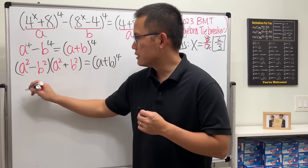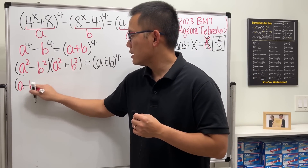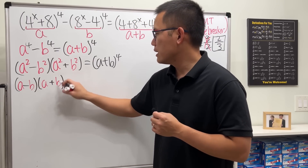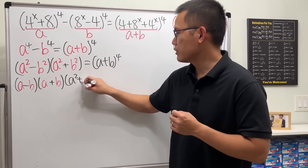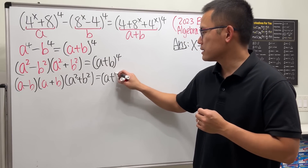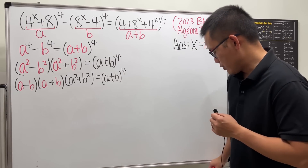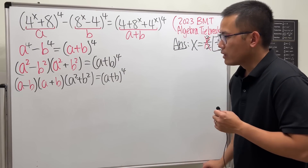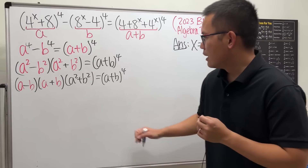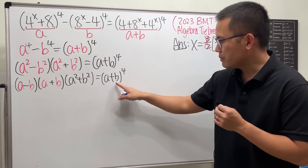We can continue factoring: a squared minus b squared is just a minus b times a plus b. So the left side becomes (a minus b)(a plus b)(a squared plus b squared), and the right-hand side is still a plus b to the fourth power.